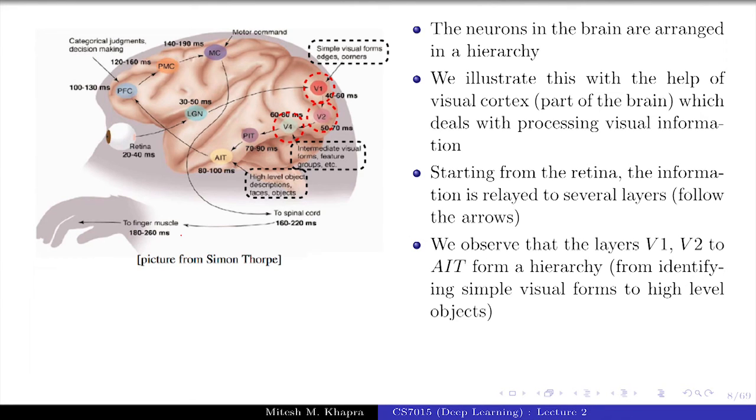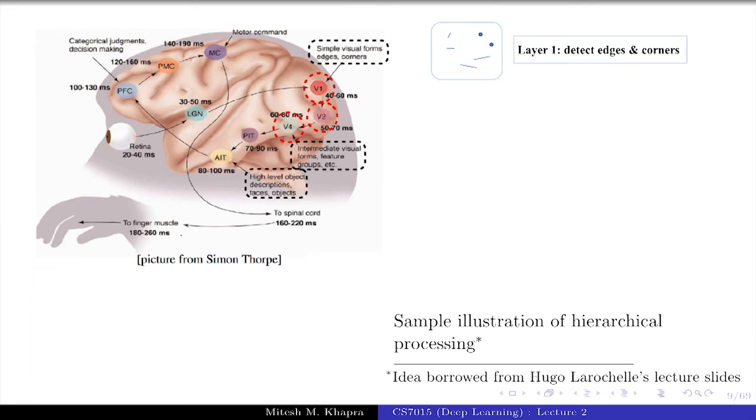The information flows through a hierarchy of layers and in this particular case, I am going to focus on these three circled layers which are V1, V2 and AIT. These actually form a hierarchy and let us see what this hierarchy does.